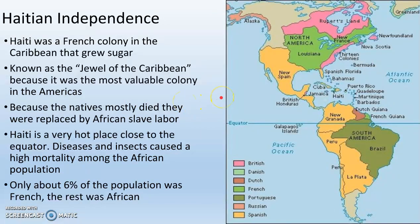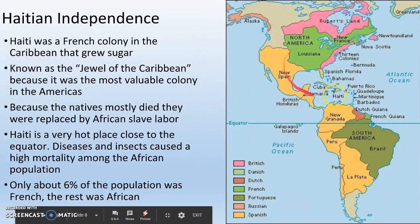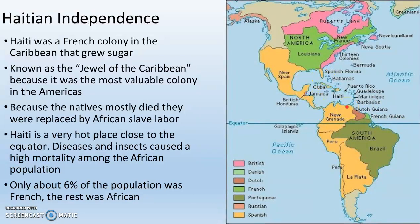Haiti is another colony in the New World, originally belonging to France. It was known as the jewel of the Caribbean because it was the most valuable piece of land in the entire Western Hemisphere — more valuable than the entire 13 colonies, more valuable than Brazil. That is because Haiti has the perfect soil to grow sugar. People in Europe loved sugar, and while they had been getting it from Asia for a long time, they were now able to grow it in the New World. Haiti was the premier producer of sugar in the world at this point, and the Europeans just couldn't get enough of it.